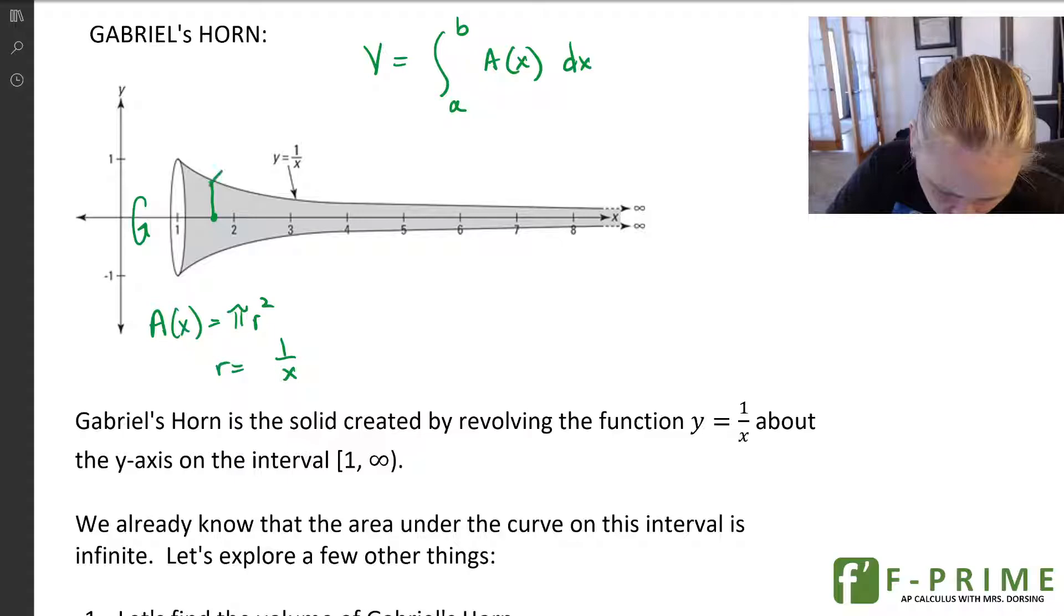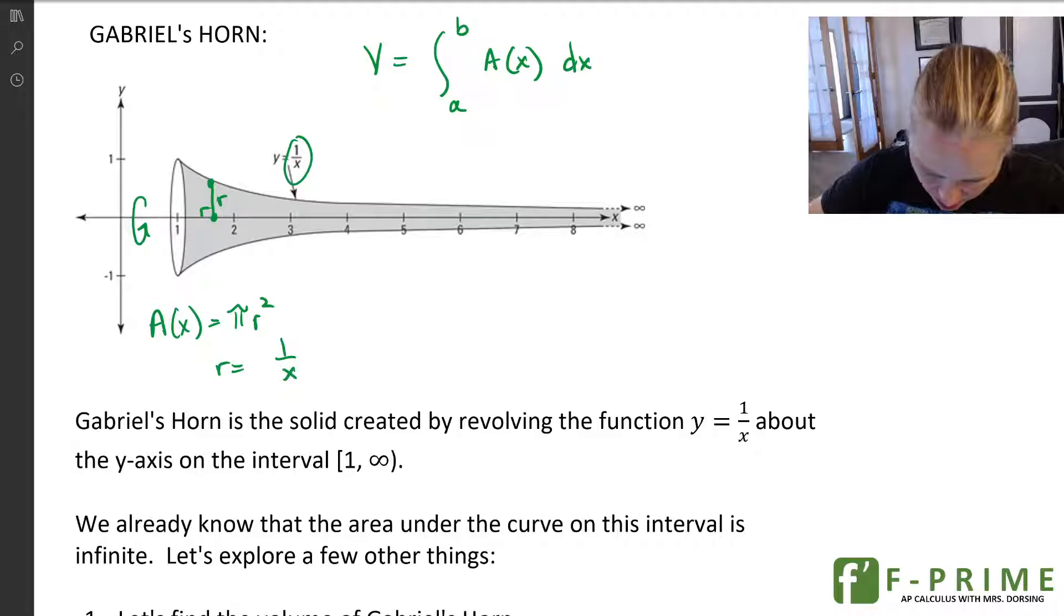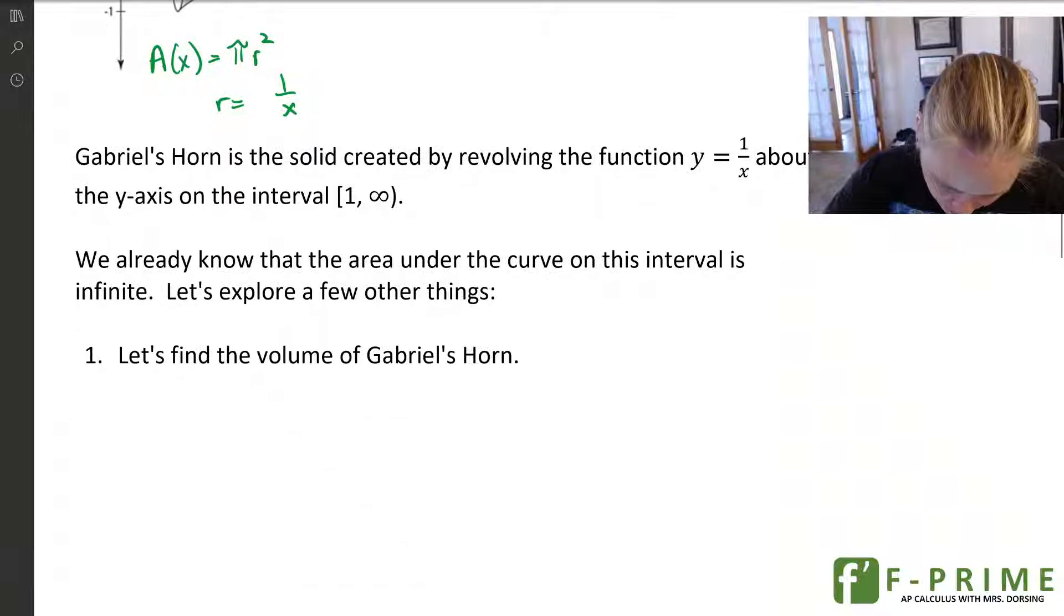So remember, r always goes from the axis of revolution to the curve. So this is r, it's this function value. Also, I'm going to note that this is a dx setup because that cross section is perpendicular to the x-axis. So here we go. Let's go ahead and set up our integral, and let's find the volume.